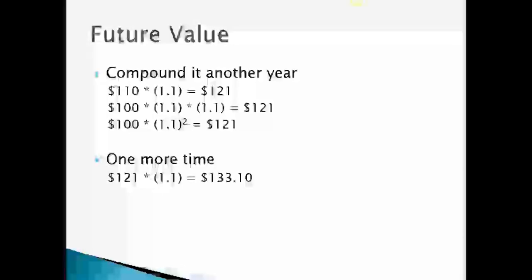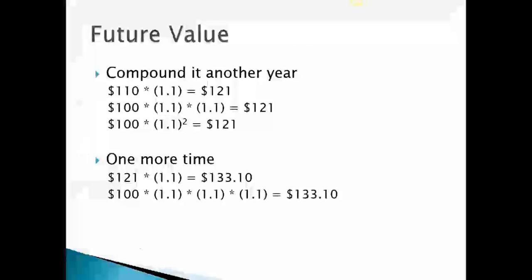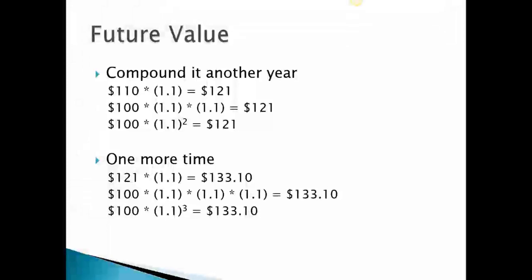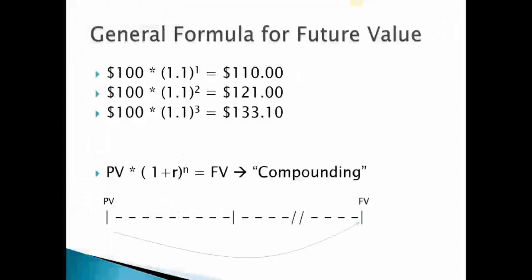Let's add a third year. Starting with $121, we multiply by 1.1 again, ending with $133.10 after the third year. That's equivalent to starting with $100, compounding it three years, earning ten percent each year. The future value is $133.10, represented as $100 times 1.1 to the third power.